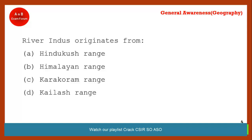The very first question is: river Indus originates from which of these ranges? These are the four options. The Indus river is also known as Sindhu river. Yes, Prena, you are right — it's the Kailash range. The Indus river originates from the Kailash range.